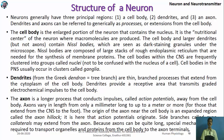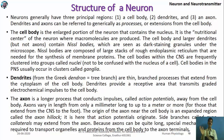Nissl bodies are dark-staining granules — they are nothing but rough endoplasmic reticulum, which synthesizes proteins necessary for the functioning of neurons. Dendrites are thin, short branched processes present outside the cell body, used for the transmission of cell signals. The axon is a long process that conducts impulses and transmits action potentials.